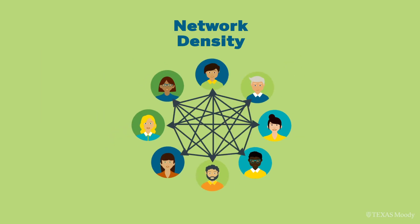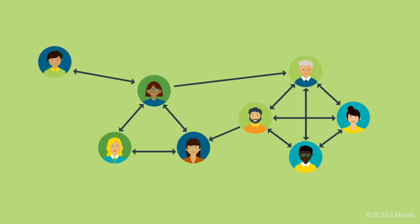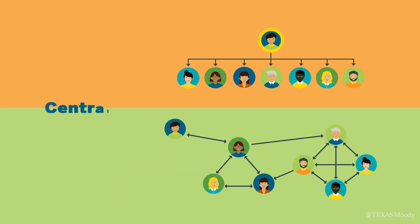A highly dense network is one in which there are many links among network members. If a person is connected to many others, we can describe them as central in the network. Alex is the most central in the formal organizational chart, but not in the emergent system reflected in the flows of emails in the organization. Almost no one emails Alex.